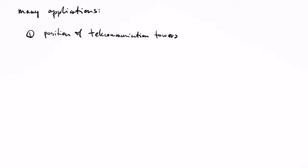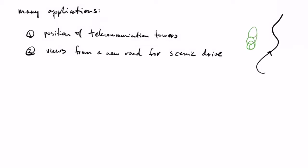Several applications in GIS that use terrains involve visibility queries. One example is the positioning of telecommunication towers — we want to ensure that at every position we have a direct line of sight to the towers. Another application is planning a scenic road in a mountainous area, where we want people to see only the nice parts of the surroundings, avoiding views of things like a nuclear plant or a clear-cut forest.